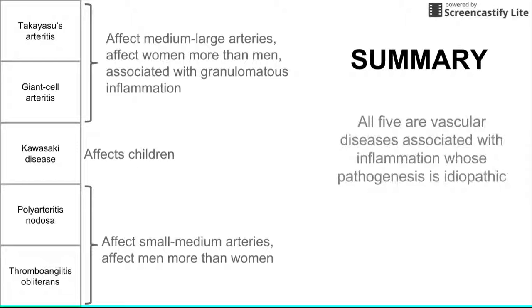All five of these diseases are vascular diseases associated with inflammation, and unfortunately the pathogenesis of all five is idiopathic in origin. We find some trends and commonalities between people who have these diseases, which is what allows us to characterize them, but we ultimately don't know how the disease starts. That's all for inflammatory vascular diseases — thanks for listening.